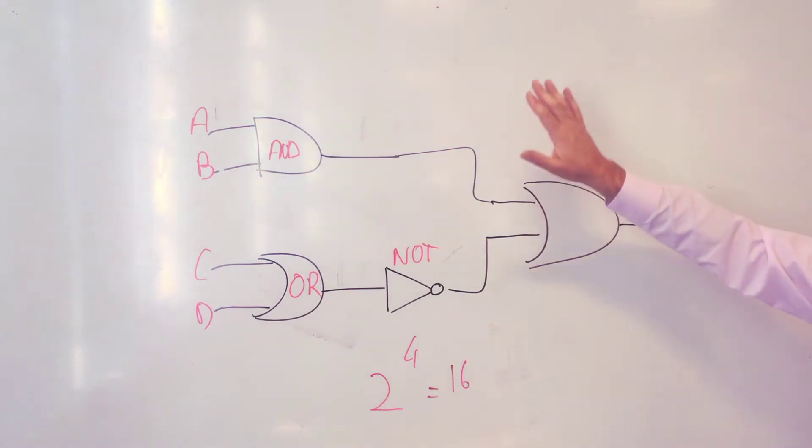We've got this circuit over here and instead of doing the truth table, we want to put a logical expression, like an equation what you do in maths, to predict, to tell us when the output will be a 1.